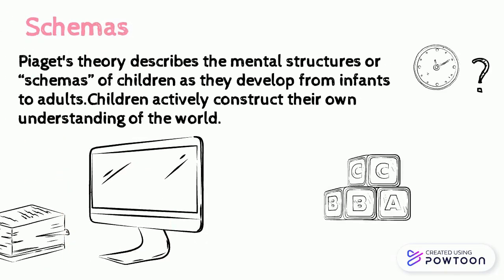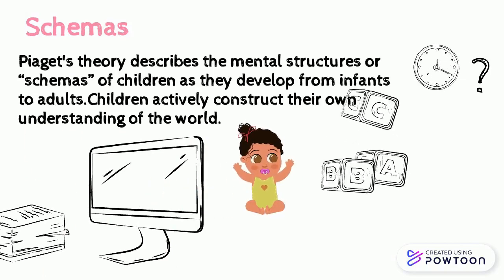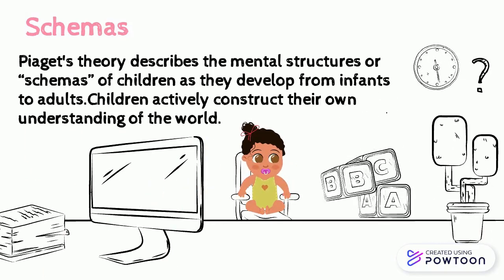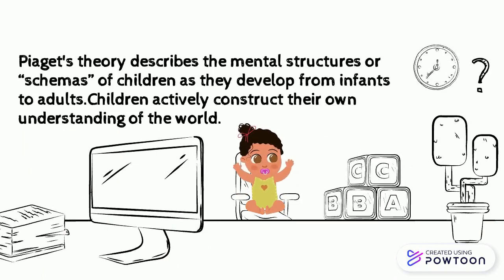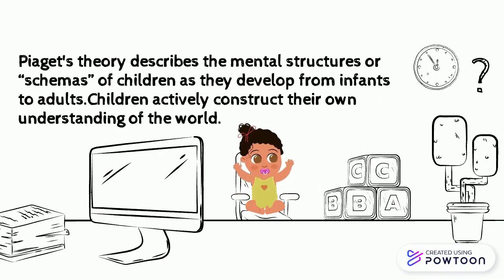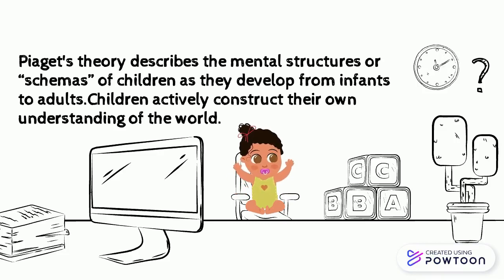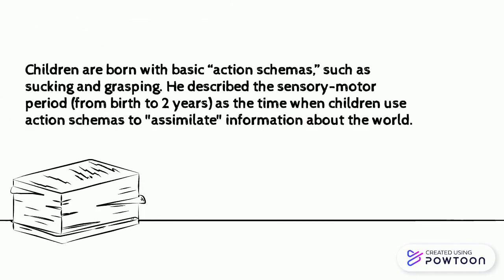First, schemas. Piaget based his theory on the idea that children don't think like adults. His theory describes the mental structures or schemas of children as they develop from infants to adults. Through their interactions with their environment, children actively construct their own understanding of the world. His theory emphasizes that children's language reflects the development of logical thinking and reasoning skills in periods or stages, with each period having a specific name and age reference.